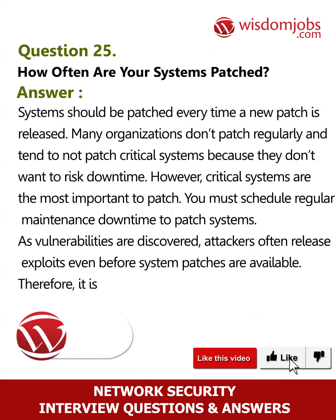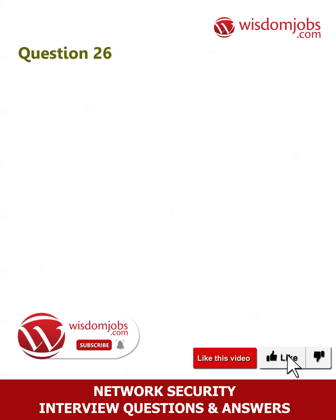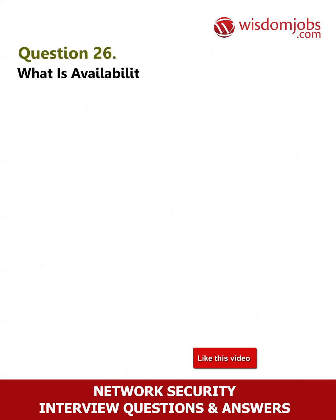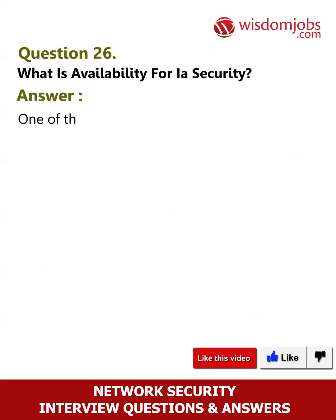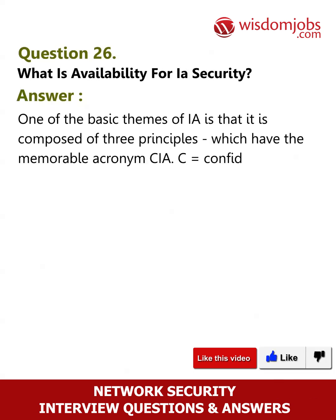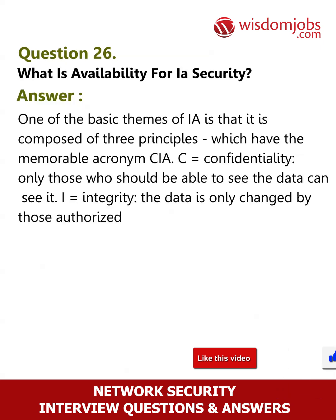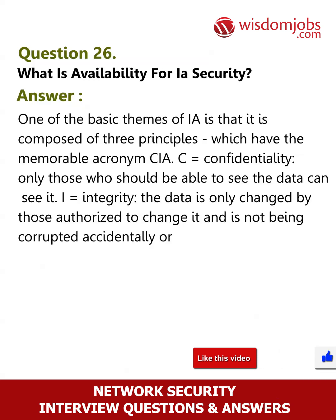Question 26: What is availability for your security? One of the basic themes of information assurance is that it is composed of three principles with the acronym CIA. C equals confidentiality — only those who should be able to see the data can see it. I equals integrity — the data is only changed by those authorized to change it and is not corrupted accidentally or intentionally. A equals availability — users can access the data when they want to or need to.